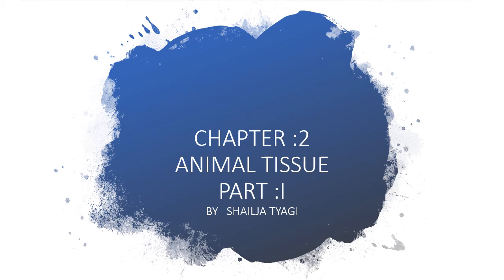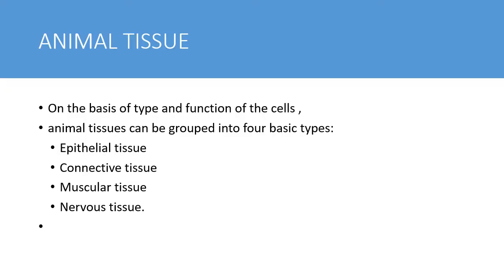Hello students, today we are going to discuss chapter number 2: animal tissue in multicellular organisms. A group of cells which perform a specific function is known as a tissue. On the basis of type and function of the cells, animal tissues can be grouped into four basic types: epithelial tissue, connective tissue, muscular tissue, and nervous tissue.